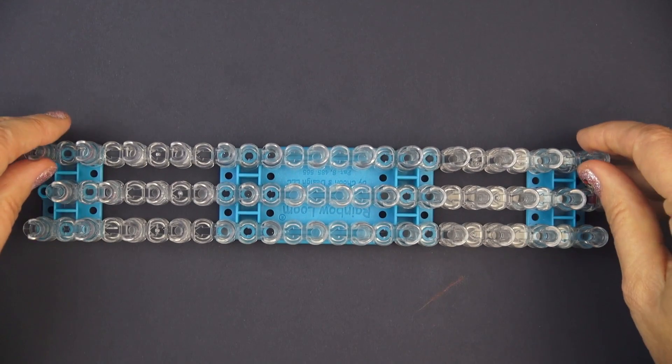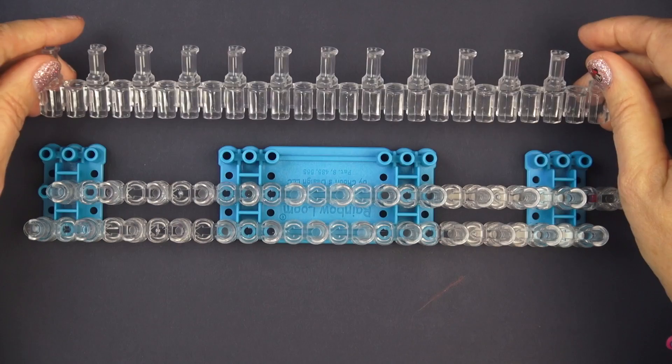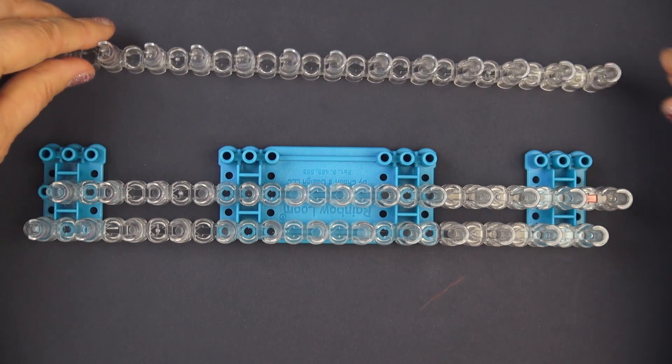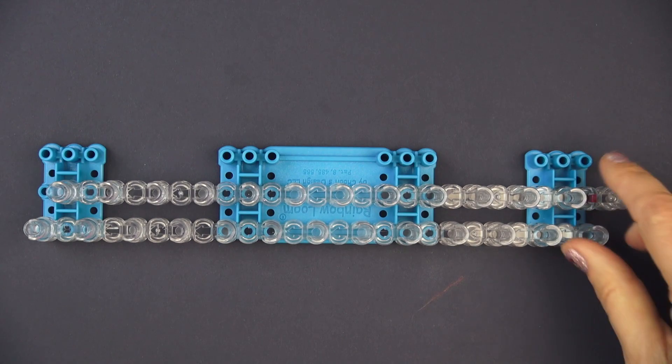This loom is neat because it comes apart and since this bracelet only needs two rows I'm gonna take this row off and then we'll just be working with these.